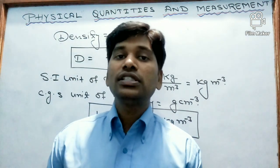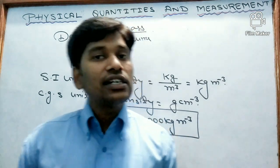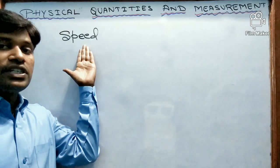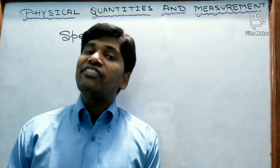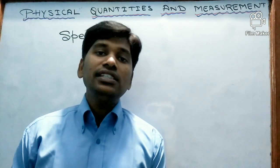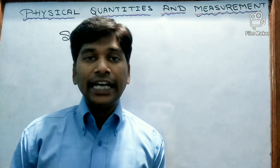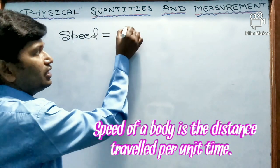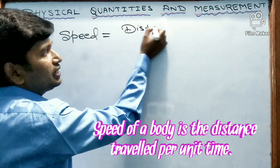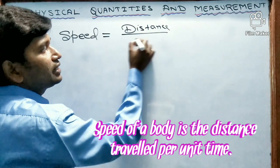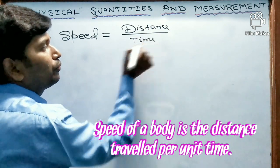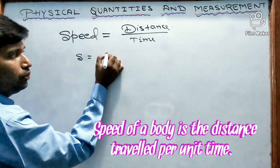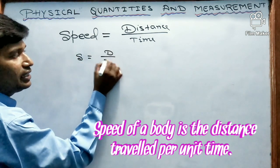Now let us see the next physical quantity, that is speed. Speed can be defined as distance travelled per unit time. That is, speed equals distance divided by time, or s equals d by t.